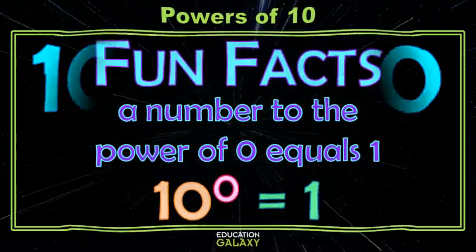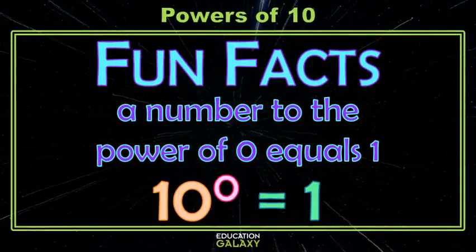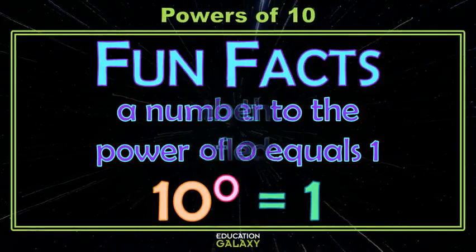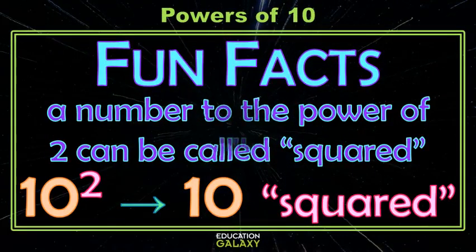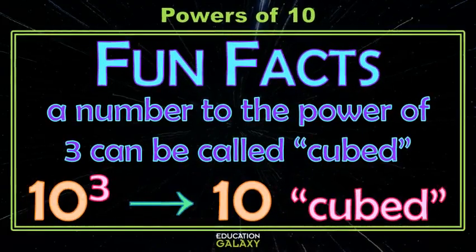A few fun facts. One is that any number to the power of 0 equals 1. Weird. Any number to the power of 2 can be called squared. Any number to the power of 3 can be called cubed. Okay, fun facts over.